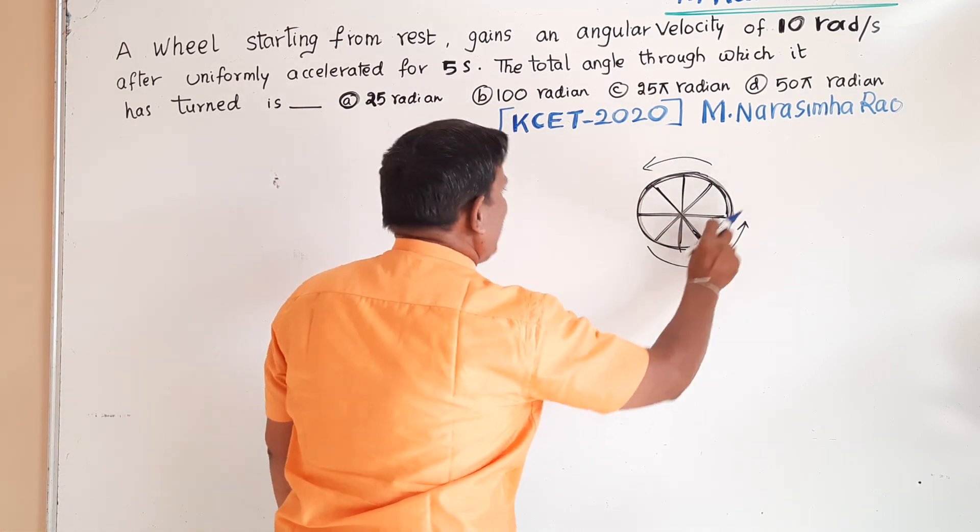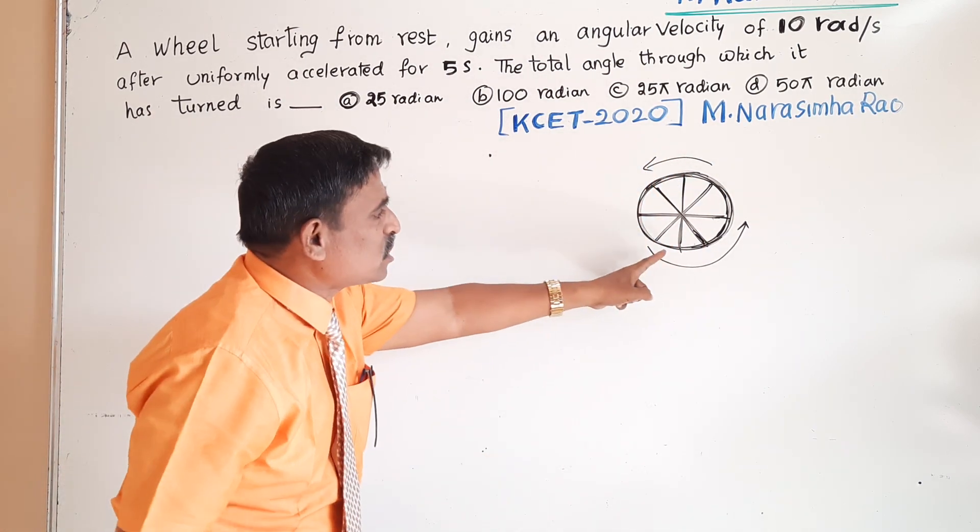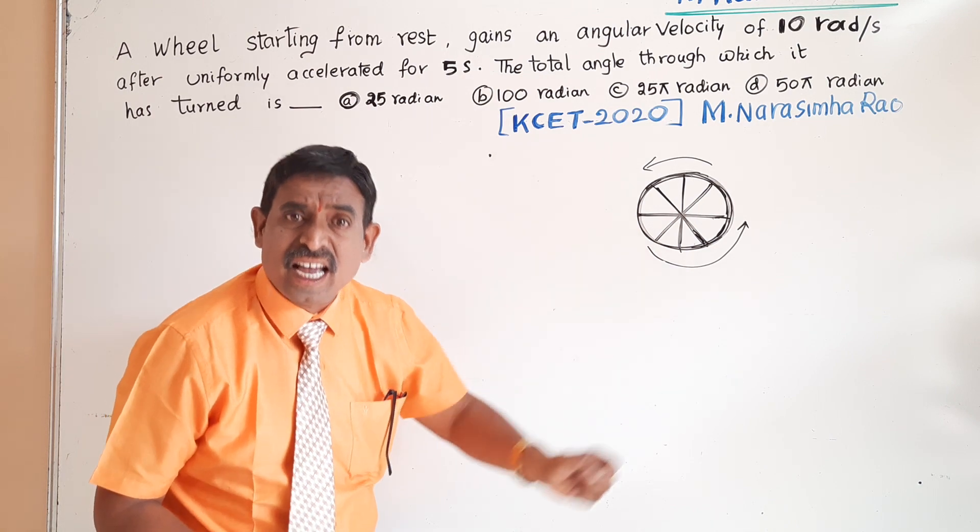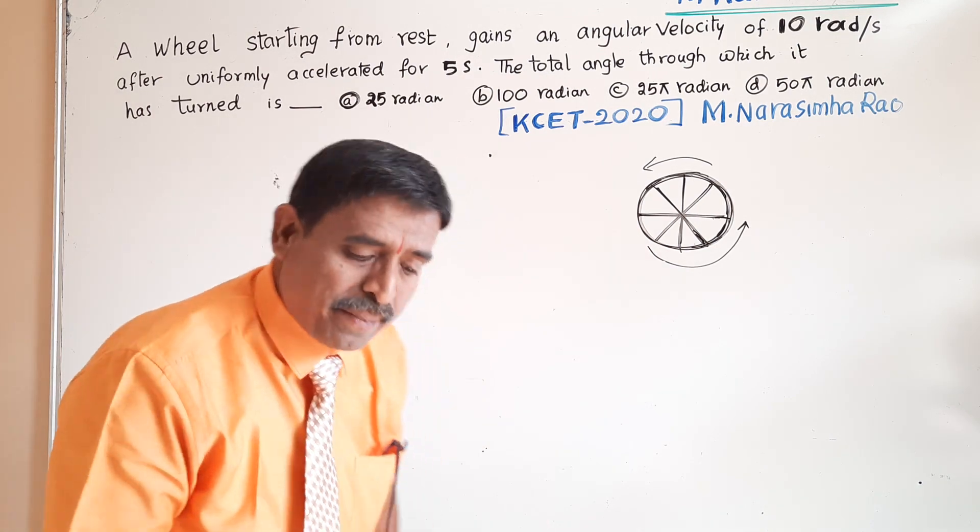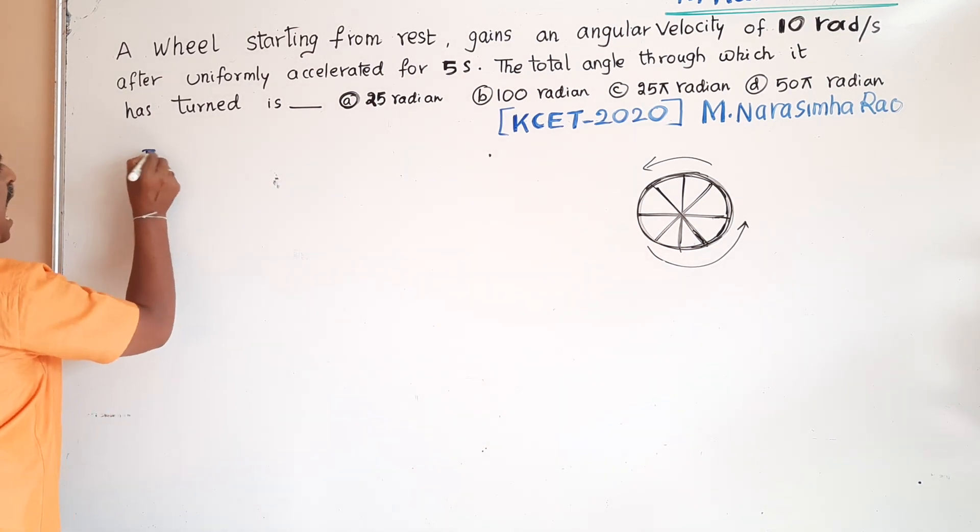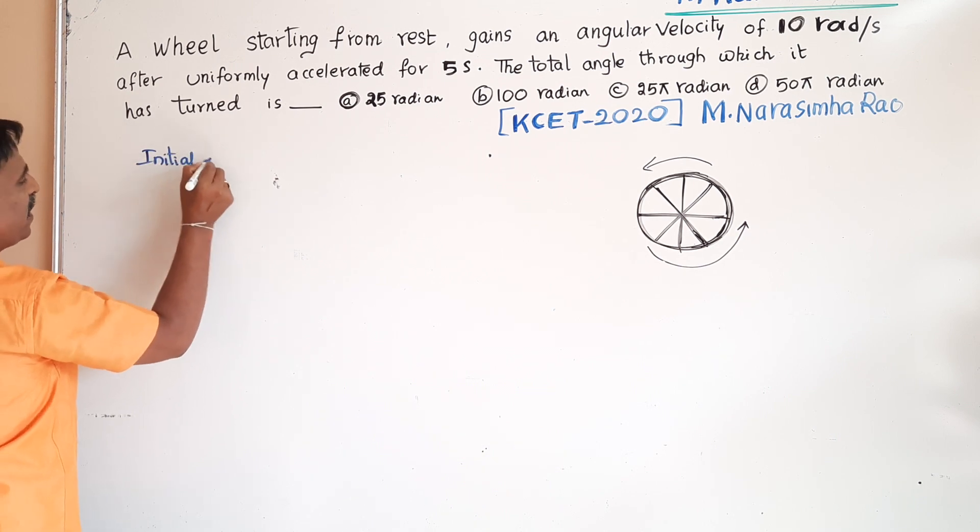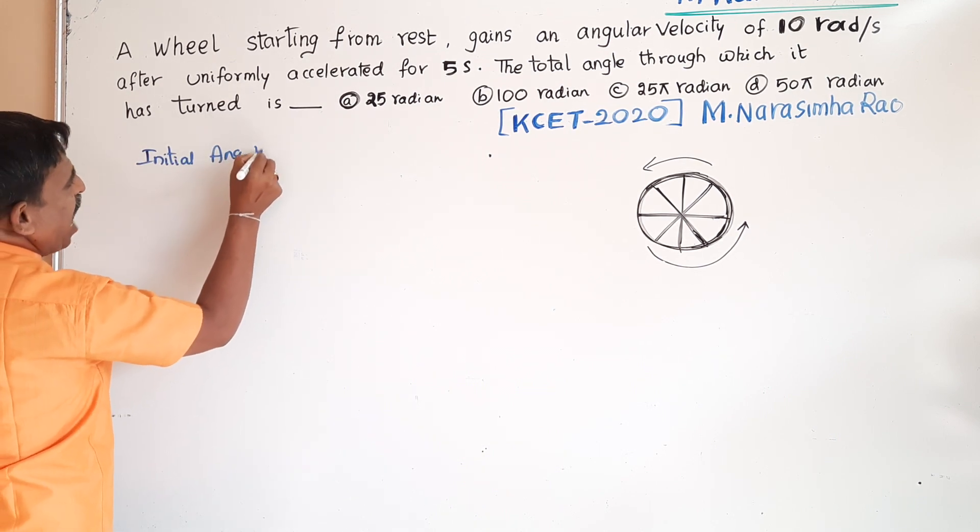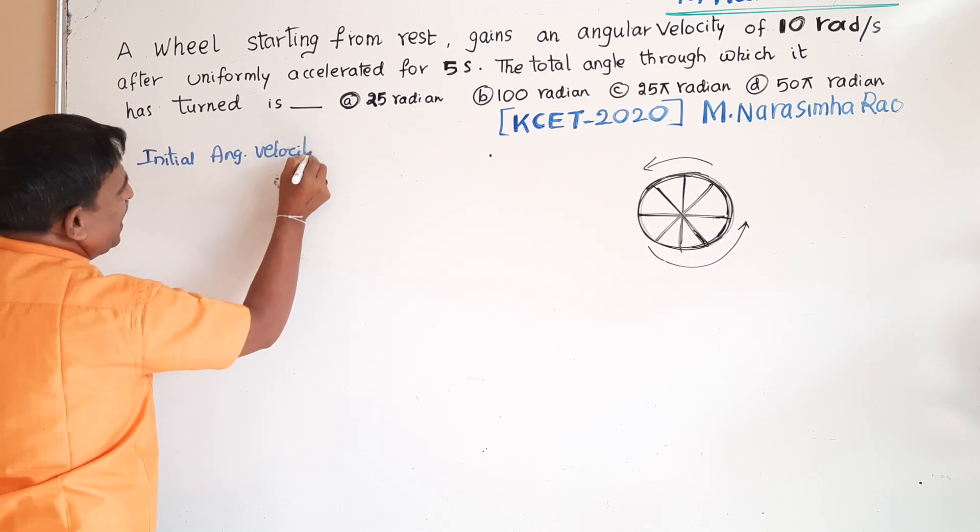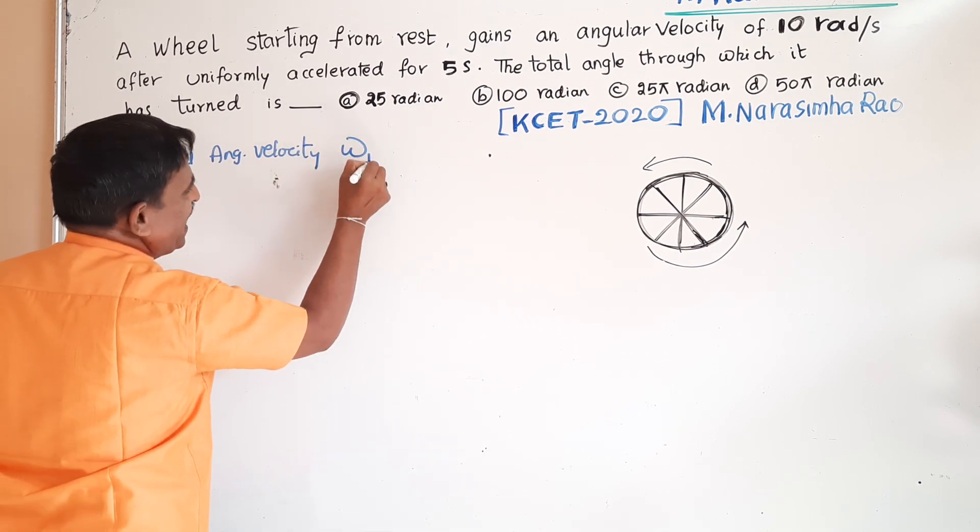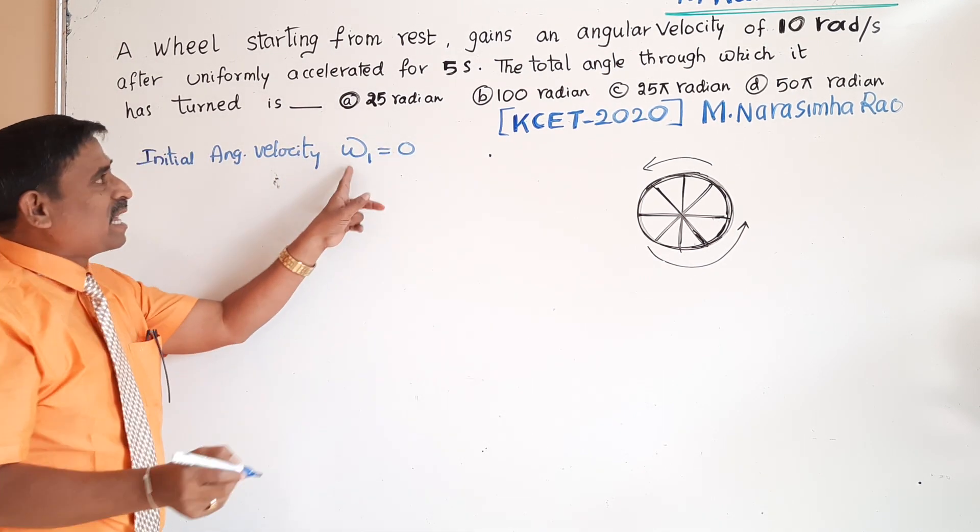Here there is a wheel. It is starting from rest. Starting from rest means initial angular velocity is 0. Initial angular velocity omega 1 is equal to 0.